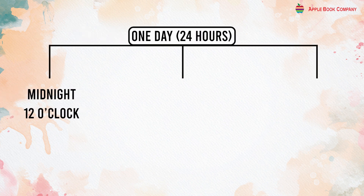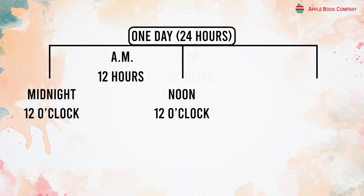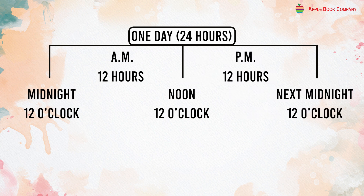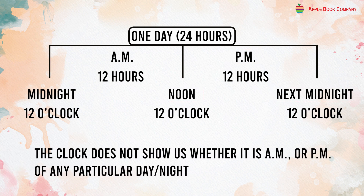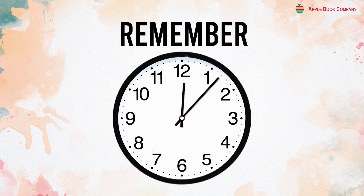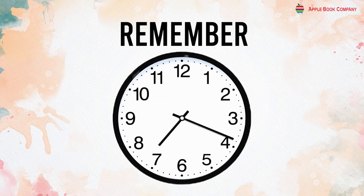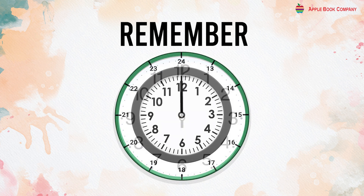One day has 24 hours. Midnight is 12 o'clock. AM has 12 hours. Noon is 12 o'clock. PM has 12 hours. And the next midnight is 12 o'clock. We indicate the time after midnight and before noon by writing AM, and the time after noon and before next midnight by writing PM. The clock does not show us whether it is AM or PM of any particular day or night. The hour hand takes 12 hours to go around the clock once; in a day of 24 hours, the hour hand goes around the clock twice.